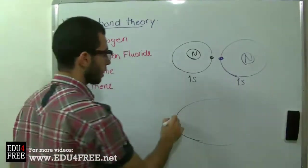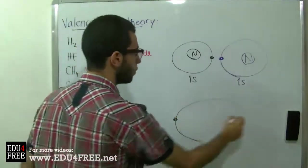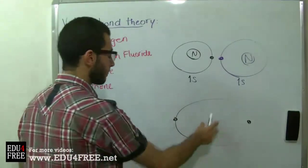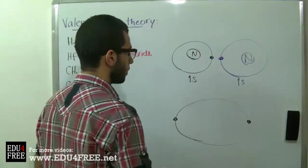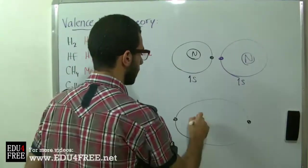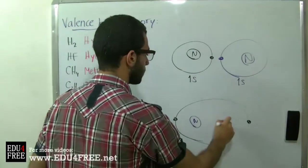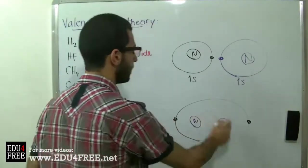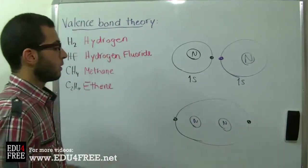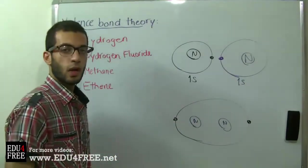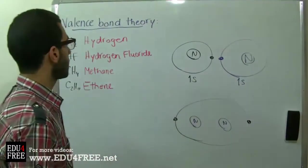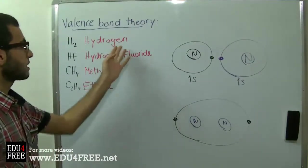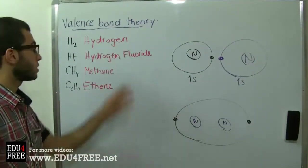The two orbitals fuse together, forming one big orbital — one big sphere containing the two electrons — and in the middle the two nuclei of the two atoms are found. This is the concept of covalent bonding in the valence bond theory, illustrated with the simplest atom: hydrogen.